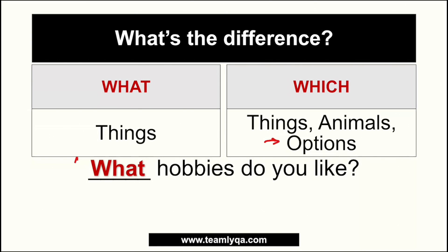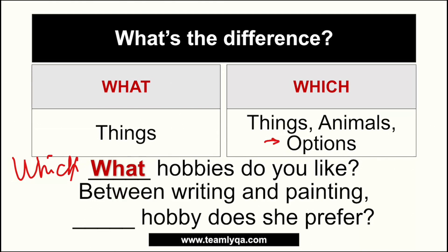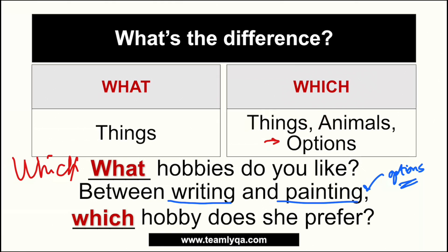But if the sentence is 'Between writing and painting, blank hobby does she prefer?' — now you have specific options: writing and painting. Because there are defined choices, you can no longer use 'what.' You have to use 'which': 'Between writing and painting, which hobby does she prefer?' So to summarize: both 'what' and 'which' can be used for things, but when there are specific limited options, only 'which' is correct.